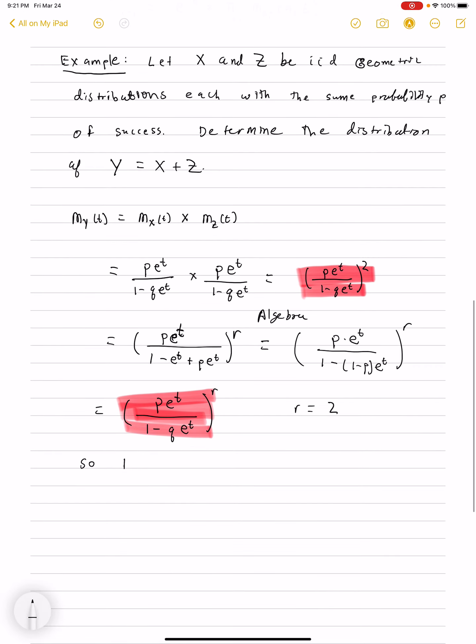By the uniqueness theorem, the first theorem, which says that moment generating functions are unique, we have that Y is a negative binomial distribution with parameters p and r equals 2.